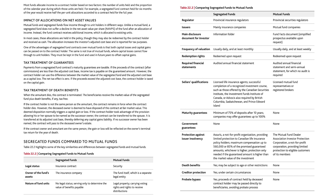Required financial statements: for segregated funds, an audited annual financial statement; for mutual funds, an audited annual financial statement and semi-annual statement for which no audit is required. Seller's qualifications: for segregated funds, they need to be licensed life insurance agents — successful completion of a recognized investment course, such as those offered by the Canadian Securities Institute, the Investment Funds Institute of Canada, or ADVOCUS, is also required by British Columbia, Saskatchewan, and Prince Edward Island. For mutual funds, they need to be licensed mutual fund representatives or registered brokers. Maturity guarantees: for segregated funds, a minimum of 75% of deposits after 10 years, and companies may offer guarantees up to 100%; for mutual funds, there are no maturity guarantees.